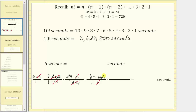Which means we can multiply by one more unit fraction to convert minutes to seconds. Because one minute equals 60 seconds and we want the units of minutes to simplify out, the last unit fraction will have a denominator of one minute and a numerator of 60 seconds. The units of minutes simplify out and now we're left with seconds, which means this product will tell us how many seconds are in six weeks. Notice all the denominators are equal to one.